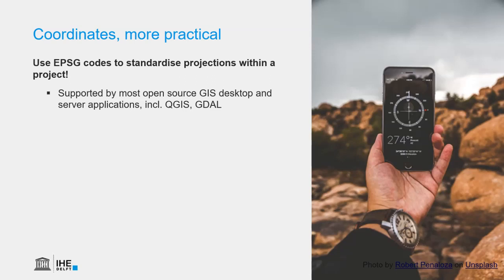Nowadays most GIS systems use EPSG codes as spatial reference system identifiers, or SRIDs, and EPSG definition data for identifying projections and performing transformations between these systems, while some also support IDs issued by other organizations, such as ESRI.